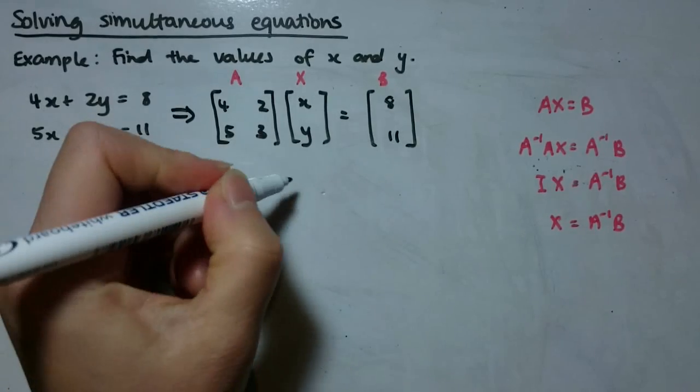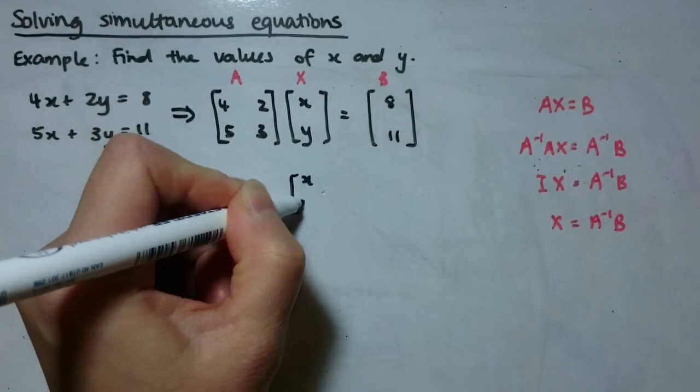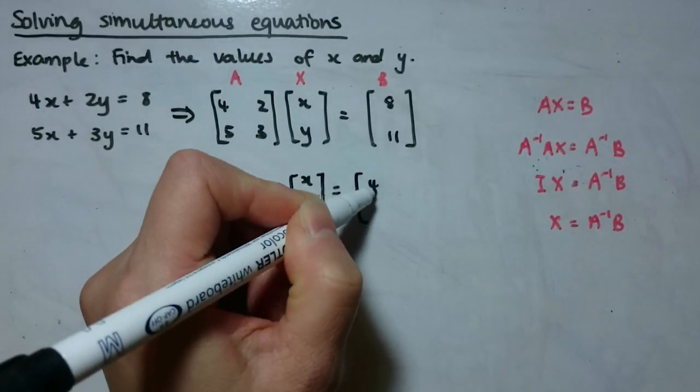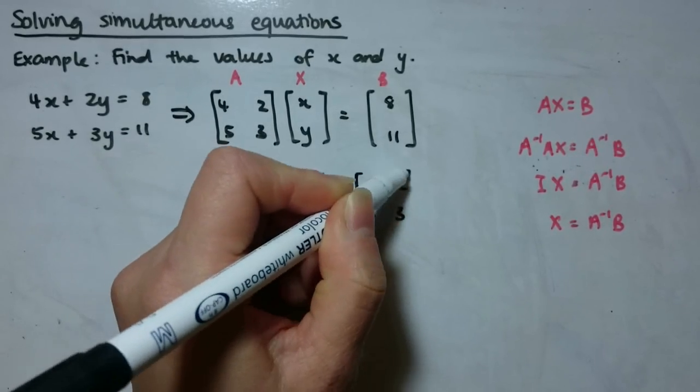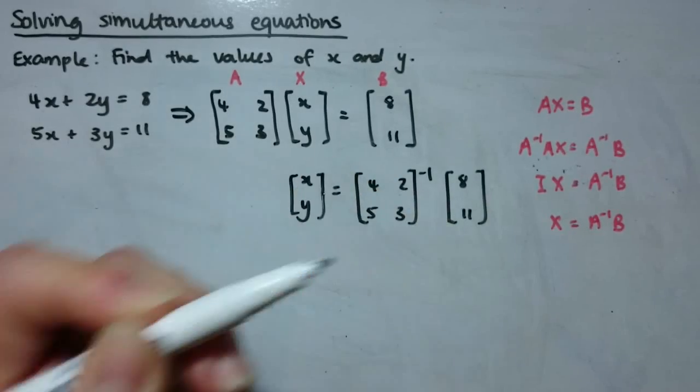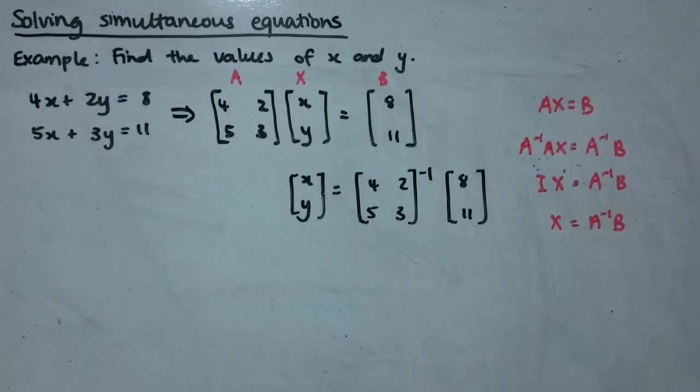Okay, so when we want to solve for this matrix X, Y, what we actually want to do is we want to find the inverse of A first, so A inverse here, and multiply that by the B. And we're going to be able to work out what the values of x and y are.